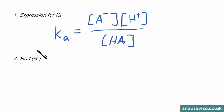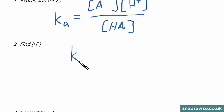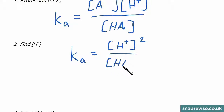We need to make some assumptions with this Ka expression to be able to find the H plus concentration. First we assume that only the acid produces H plus, so it is present in exactly the same amount as the conjugate base. This means we can rewrite the expression for Ka as the concentration of H plus ions squared divided by the concentration of the undissociated acid. We then assume that the concentration of the undissociated acid is the same as when we added it — i.e. that only a very small amount of H plus ions have dissociated.